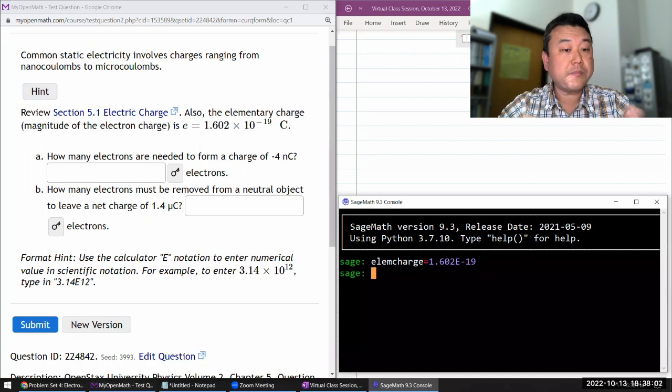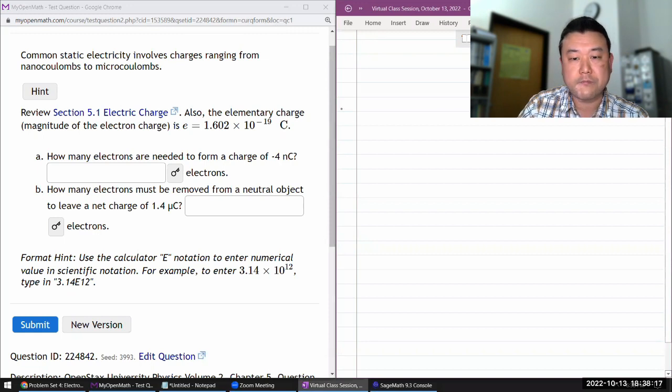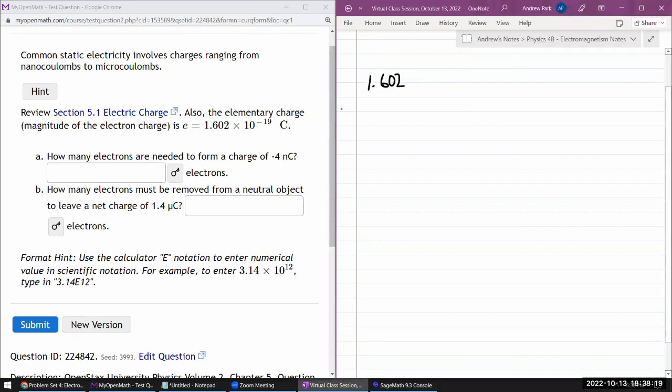It asks how many electrons are needed to form a charge of negative—electrons are negatively charged—four nanocoulombs. You could look at it as a kind of unit conversion with this electron charge. What we're saying is 1.602 times 10 to the minus 19 coulomb per electron.